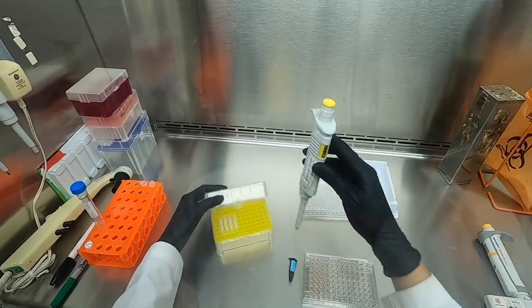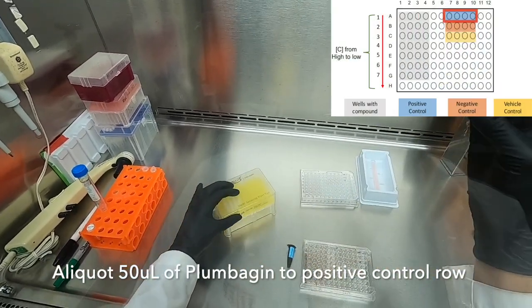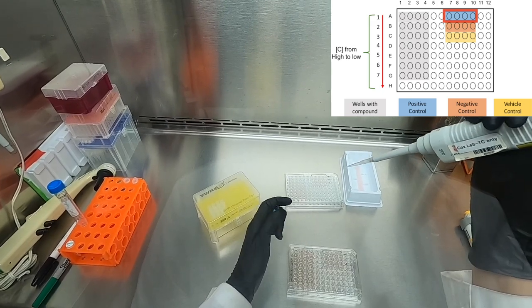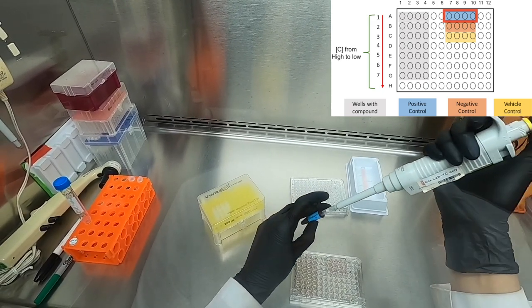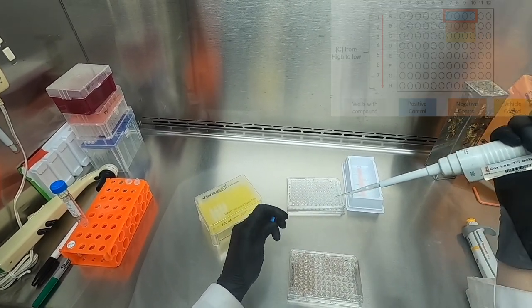Now we will begin allocating our three control groups. First, we will start with our positive control plumbagin, adding it as shown in the diagram.